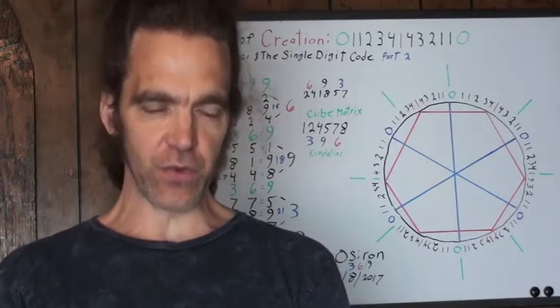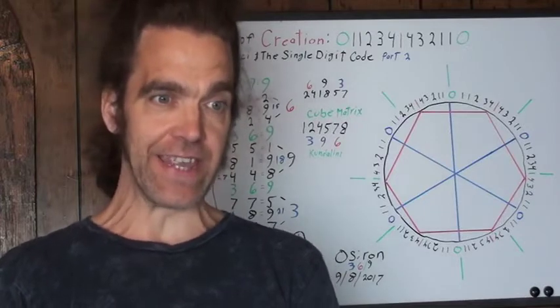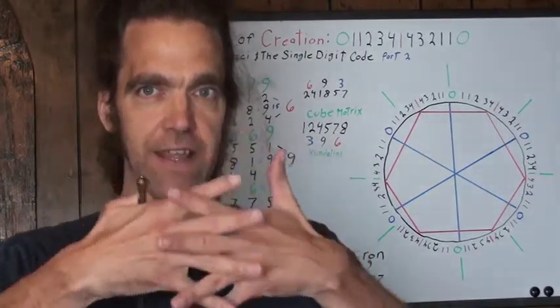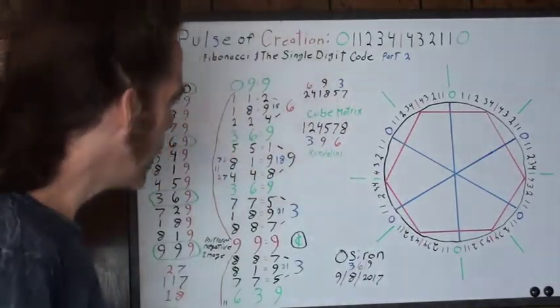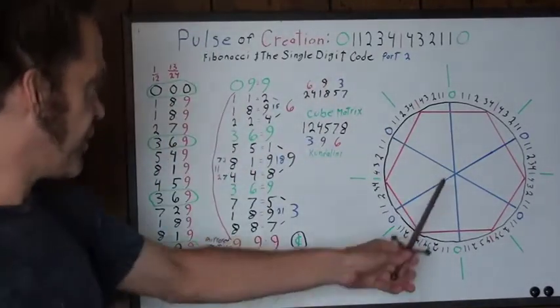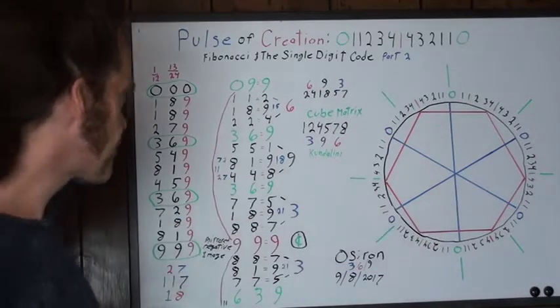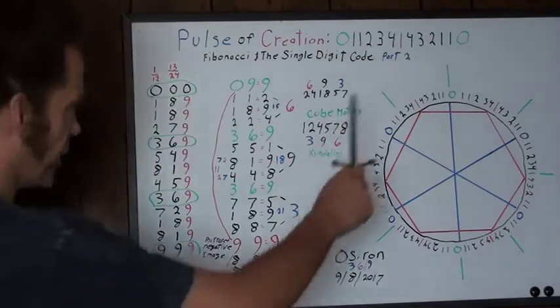This is telling you that the Fibonacci sequence is the single digit code. They work together like a gear. They are one and the same. What you'll see here is the stripped down version of the pie shape and the code in a wheel.